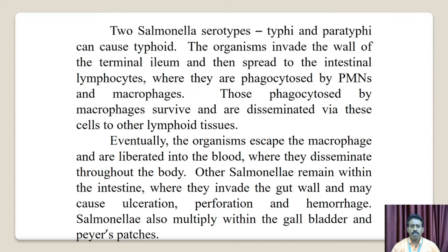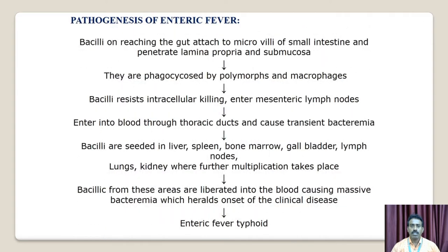Salmonella also multiplies within the gallbladder and Peyer's patches. In enteric fever pathogenesis, the bacilli reaching the gut attach to the microvilli of the small intestine and Peyer's patches in the submucosal membrane. They are phagocytosed by polymorphs and macrophages. The bacilli resist intracellular killing and enter the mesenteric lymph nodes, then enter the blood through the thoracic duct, causing transient bacteremia. They are seeded in the liver, spleen, bone marrow, gallbladder, lymphoid nodules, lungs, and kidneys, where further multiplication takes place. The bacilli are then liberated into the blood, causing massive bacteremia and onset of clinical disease — enteric fever, typhoid.